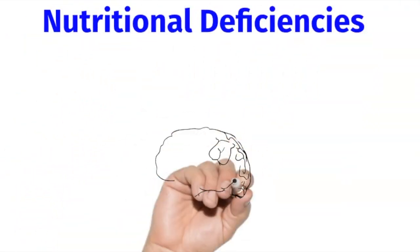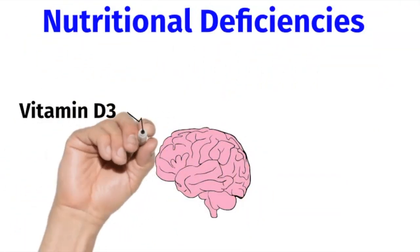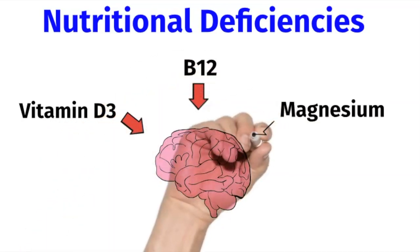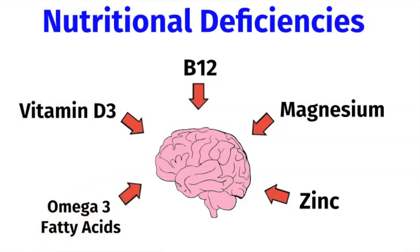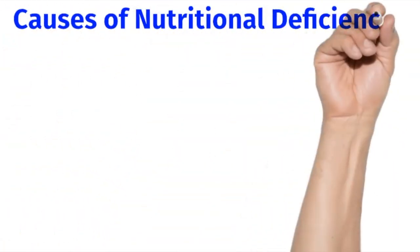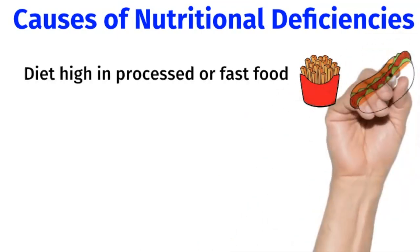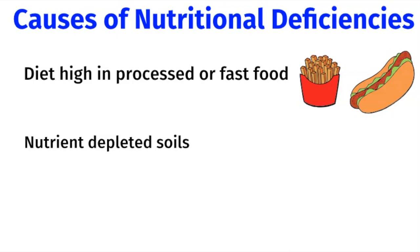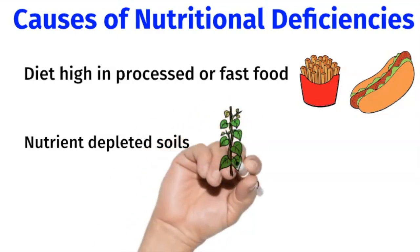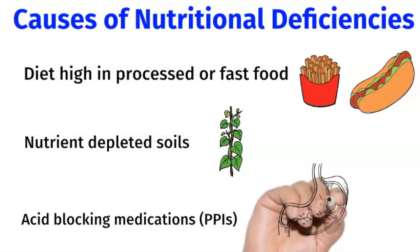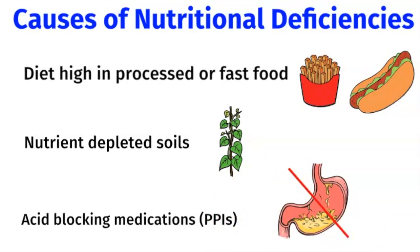The brain requires certain nutrients to function optimally. If you're deficient in vitamin D3, B12, magnesium, zinc, or omega-3 fatty acids, this could put you at increased risk of developing Alzheimer's disease. A common cause for nutritional deficiencies is eating a diet that's high in processed or fast food. Unfortunately, a lot of non-organic produce is grown on soil that's depleted of nutrients. Finally, many Americans who suffer from heartburn are taking acid-blocking medications called proton pump inhibitors. Unfortunately, these medications interfere with the absorption of B12, vitamin C, magnesium, zinc, and calcium.